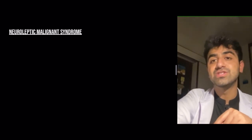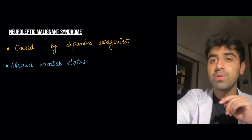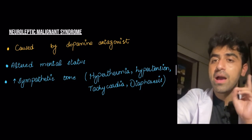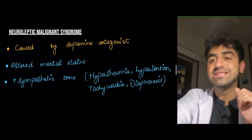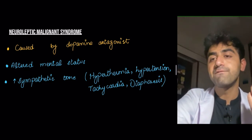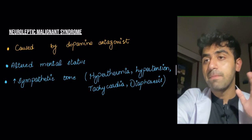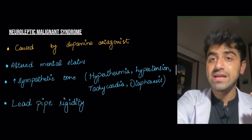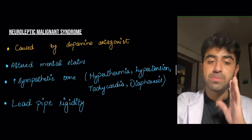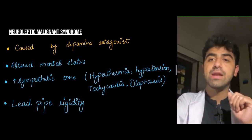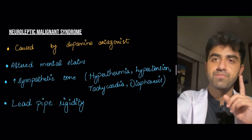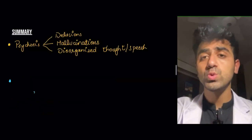Neuroleptic malignant syndrome is caused by dopamine antagonists and is characterized by altered mental status, increased sympathetic tone, hyperthermia — temperatures greater than 99.5°F — hypertension, tachycardia, diaphoresis, and lead-pipe rigidity. A separate video covering neuroleptic malignant syndrome in detail will be linked in the description.